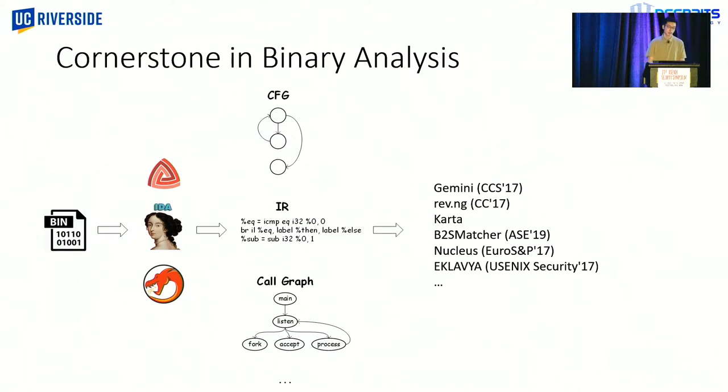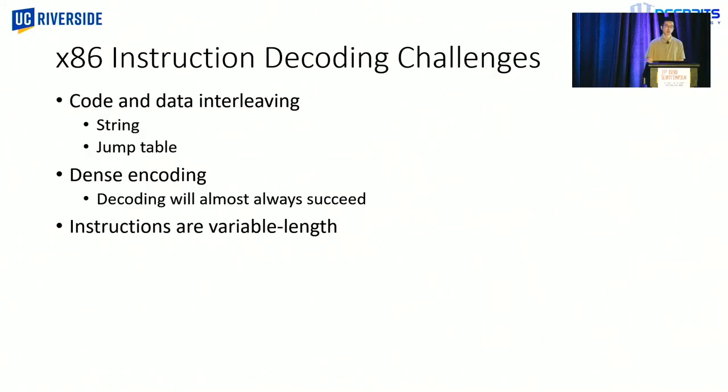However, as you may have noticed, there's no time-critical tasks in this list, such as malware detection, and that is because disassembling is slow. Here we only focus on x86 instructions, and disassembling such instructions are not straightforward. That's one of the main reasons why disassembling is slow.